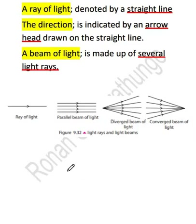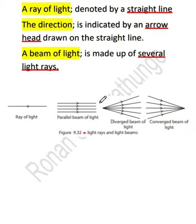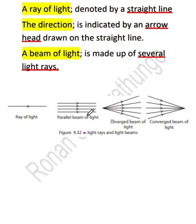We have to understand how to draw rays of light. Normally, one ray of light is denoted with one straight line and an arrowhead. When you are to draw a parallel beam of light, you should draw several straight lines along with arrowheads pointing towards the same direction. This will form a parallel beam of light. A beam of light is basically a collection of rays of light.